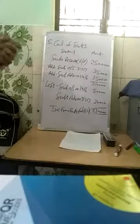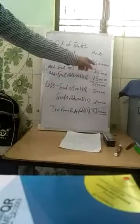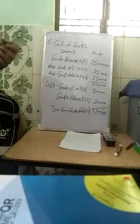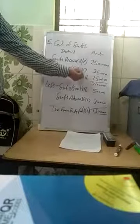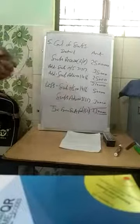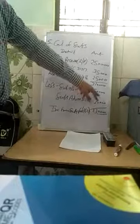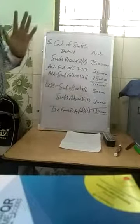In the statement method: Subscription received Rs. 2,50,000. Add subscription outstanding at the end (31st March 2017) Rs. 35,000 — outstanding at end will be plus. So subscription outstanding at the beginning (1st April 2016) Rs. 50,000 will be minus. These are opposite treatments.